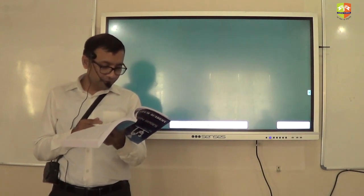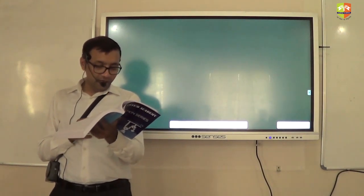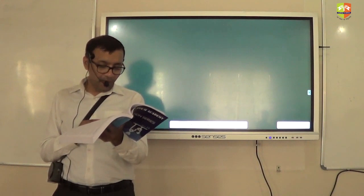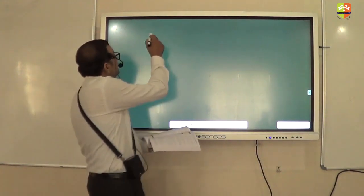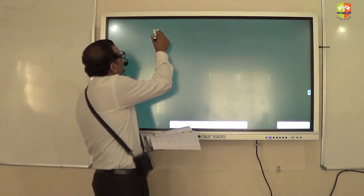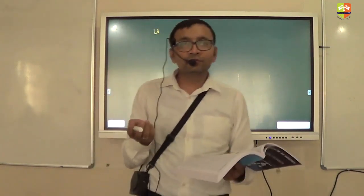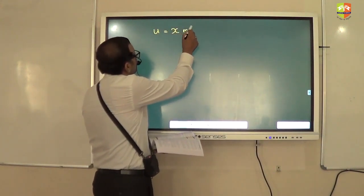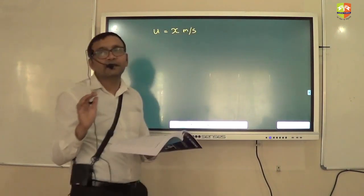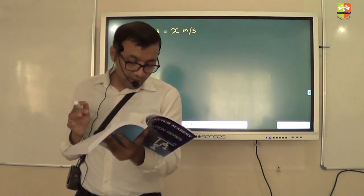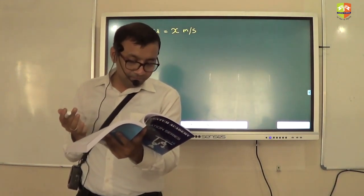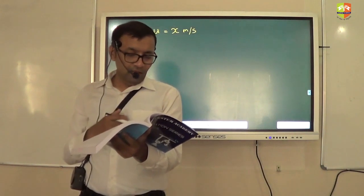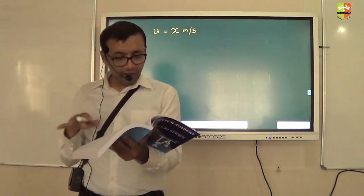A bullet loses 1/20th of its velocity in passing through a plane. Right? Keep going. If initial velocity is u, let's say initial velocity is x if you are comfortable with that. Let initial velocity be x meter per second. Okay? The final velocity will be what? Zero. Loses 1/20th of its velocity.